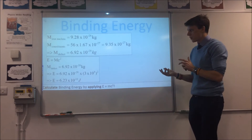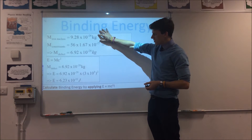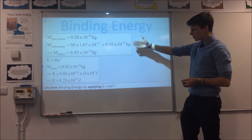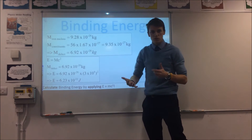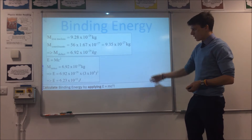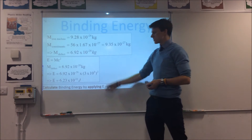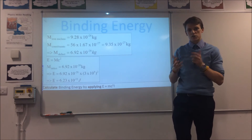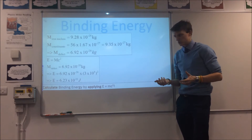Let's do some calculations to see how this works — using iron, and you'll see later why I picked iron. You can get the total mass of an iron nucleus. You can also calculate the mass of its constituent parts by multiplying the mass of a nucleon by 56, because that's how many nucleons there are. Finding the difference between these values gives something called the mass defect — a very small number, but we're dealing in very, very small masses here, so that's not surprising.